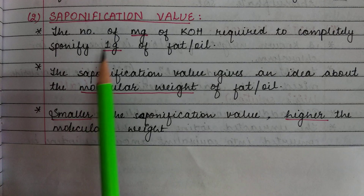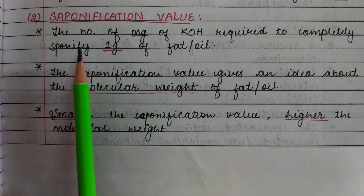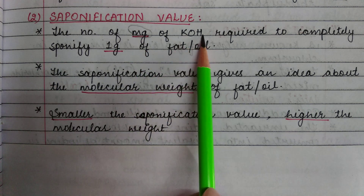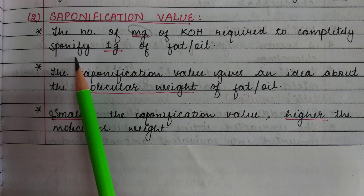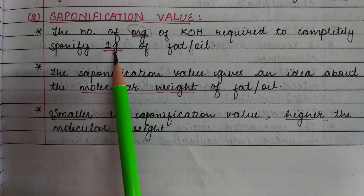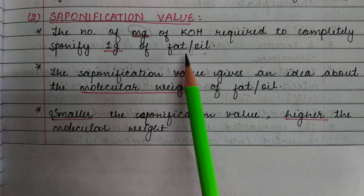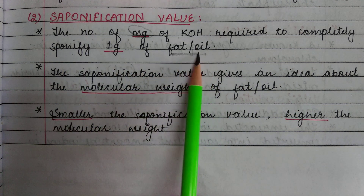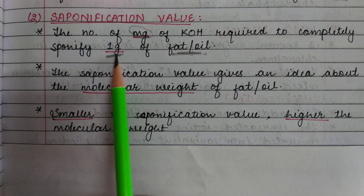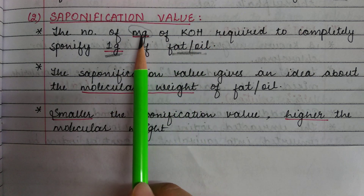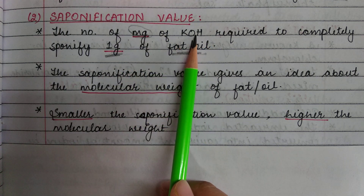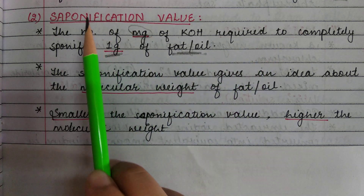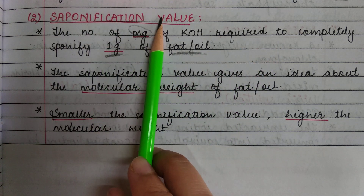Next is saponification value. It is defined as the number of milligrams of KOH required to completely saponify 1 gram of fat or oil. That means the amount of KOH required in milligrams to saponify 1 gram of fat or oil is called the saponification value.